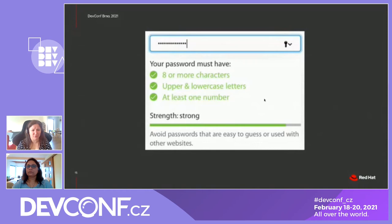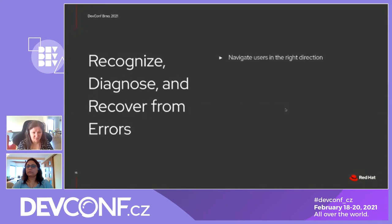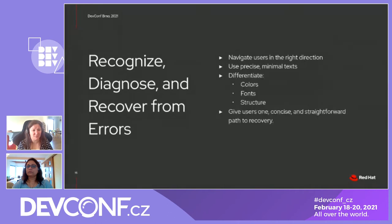Now let's move from error prevention to what happens if an error appears. Users start to feel nervous and frustrated. Therefore, the process of diagnosing and recovering from errors must be as simple as possible. When emotions rise, we tend to stop thinking clearly, so all actions must be as clear as possible. Technical writers can help with minimal and precise texts. Differentiate using color, fonts, and structure, and give your users one simple path to recovery.